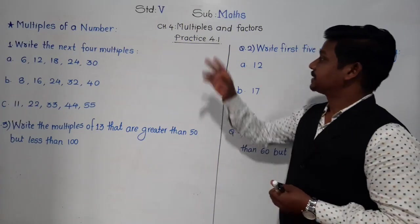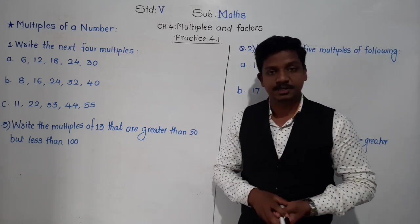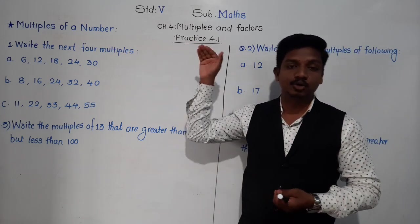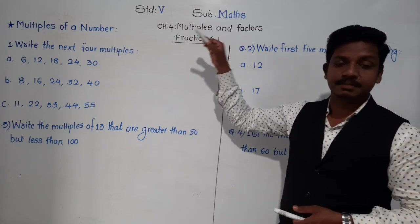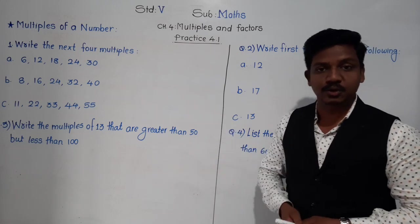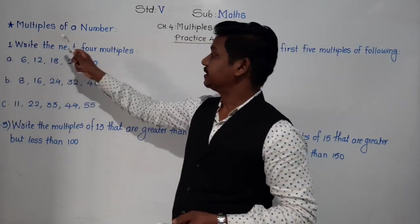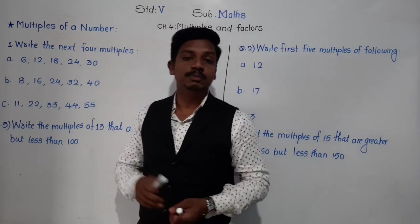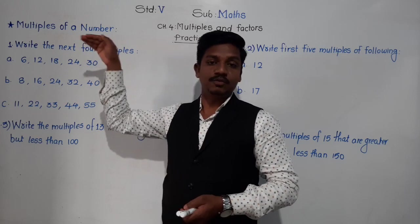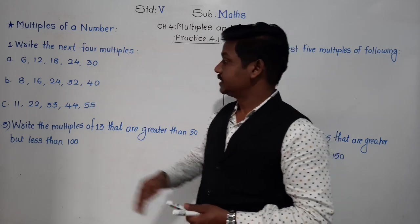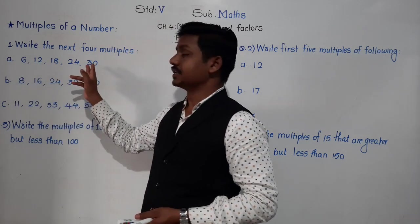Let's solve practice 4.1, which is based on the concept of multiples we just covered. Question 1: Write the next 4 multiples of the following. Part A shows the series: 6, 12, 18, 24, 30.